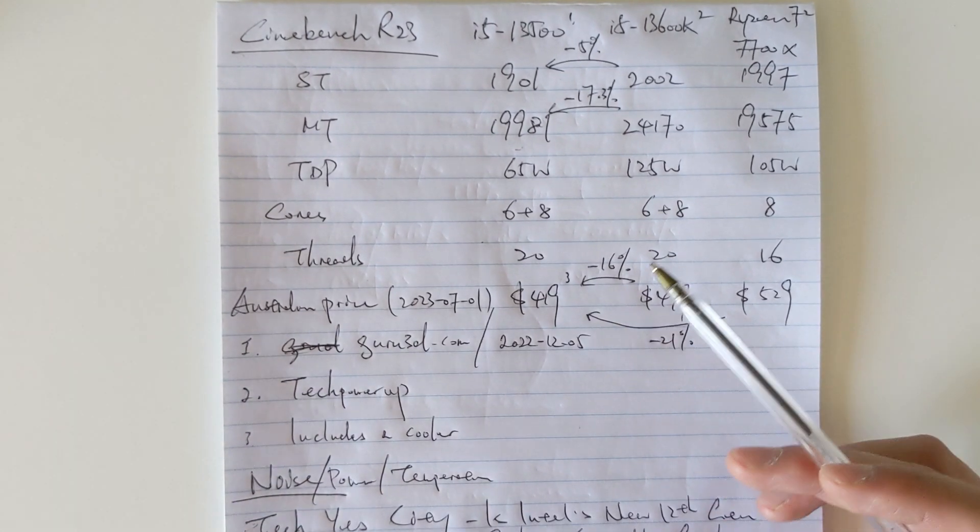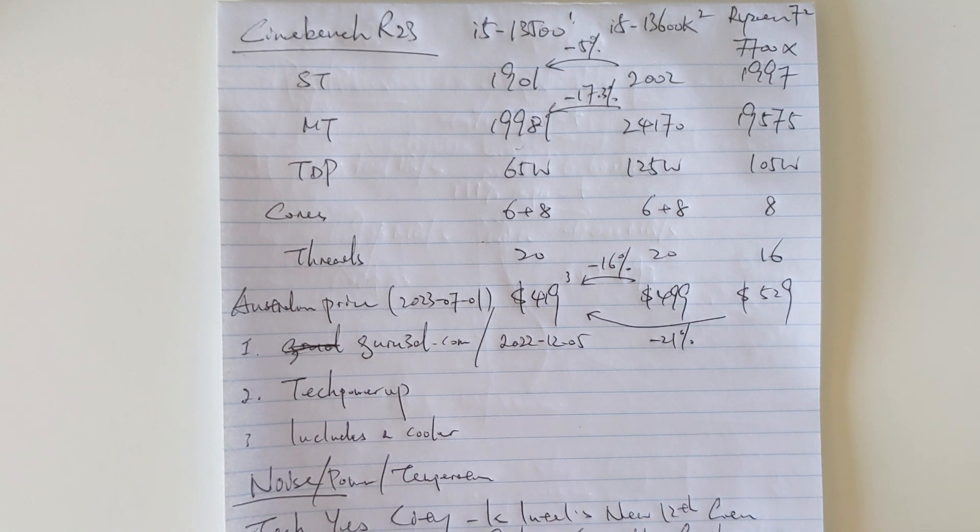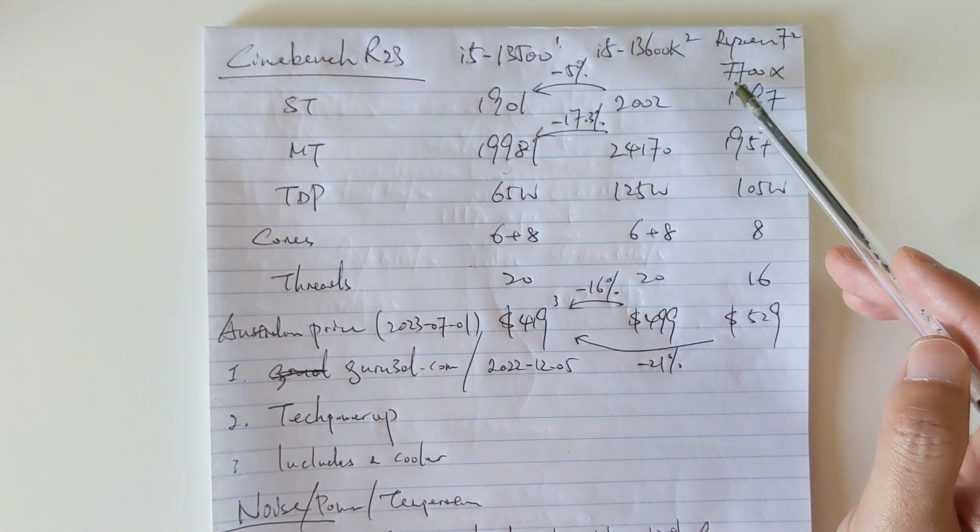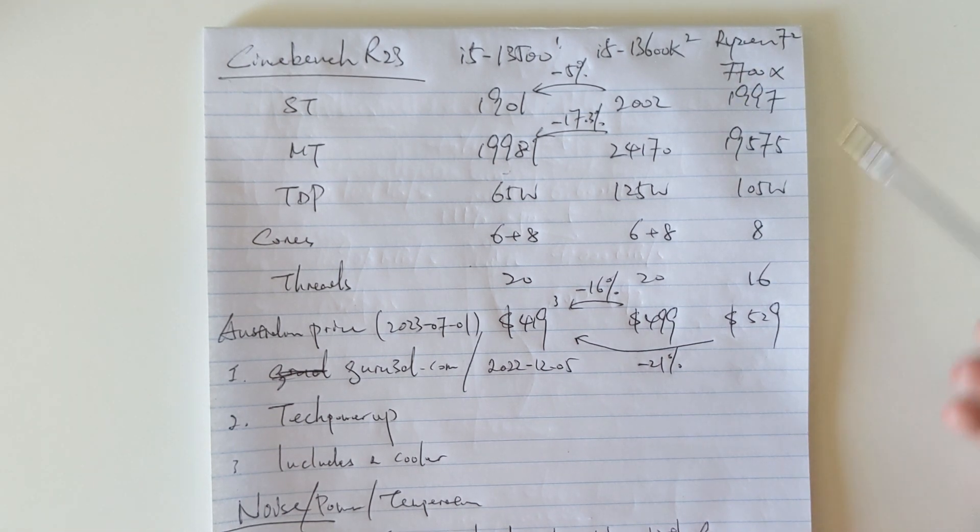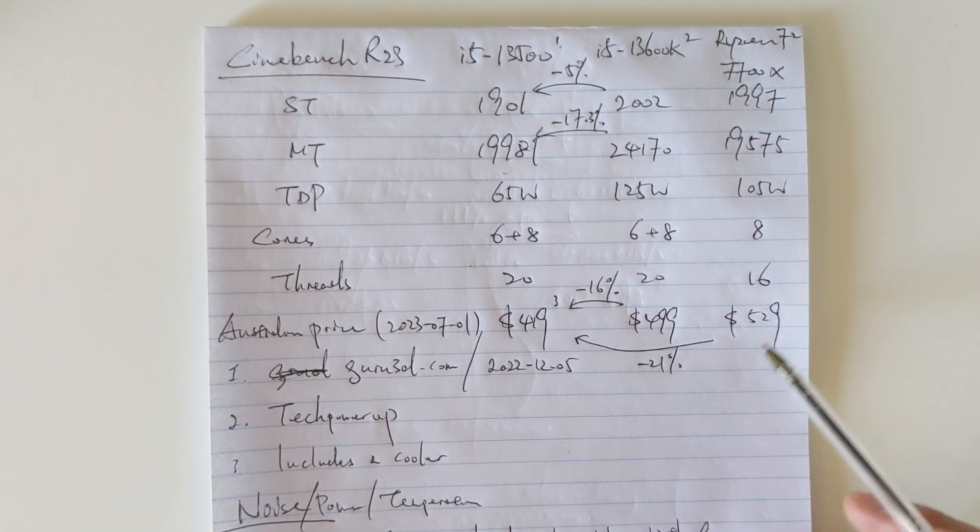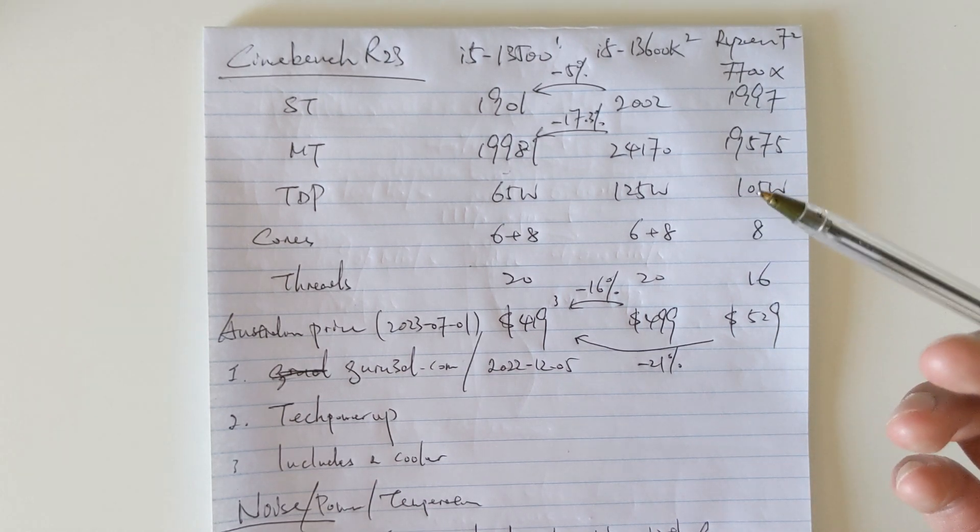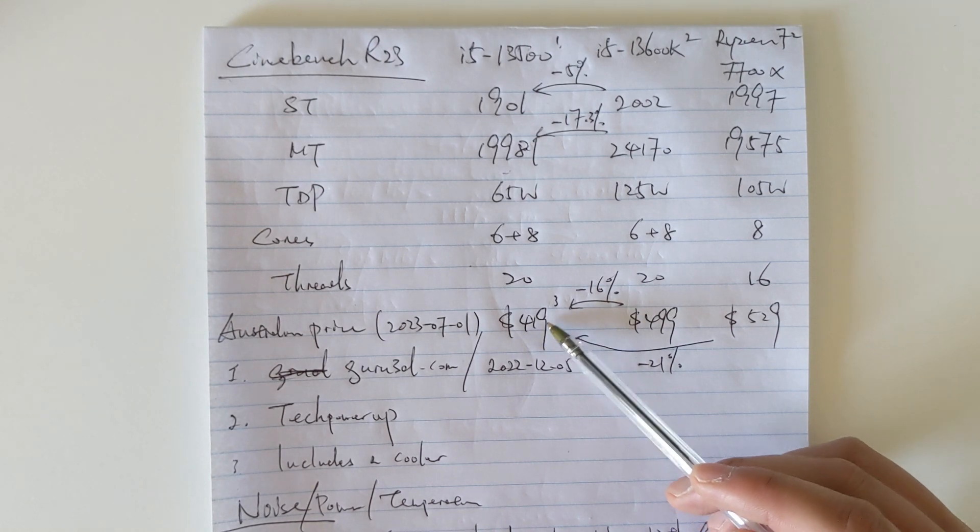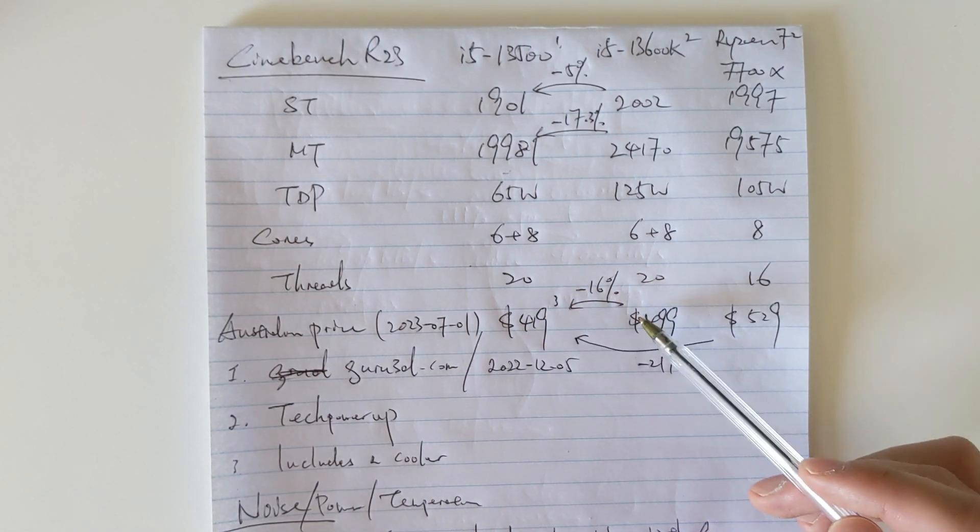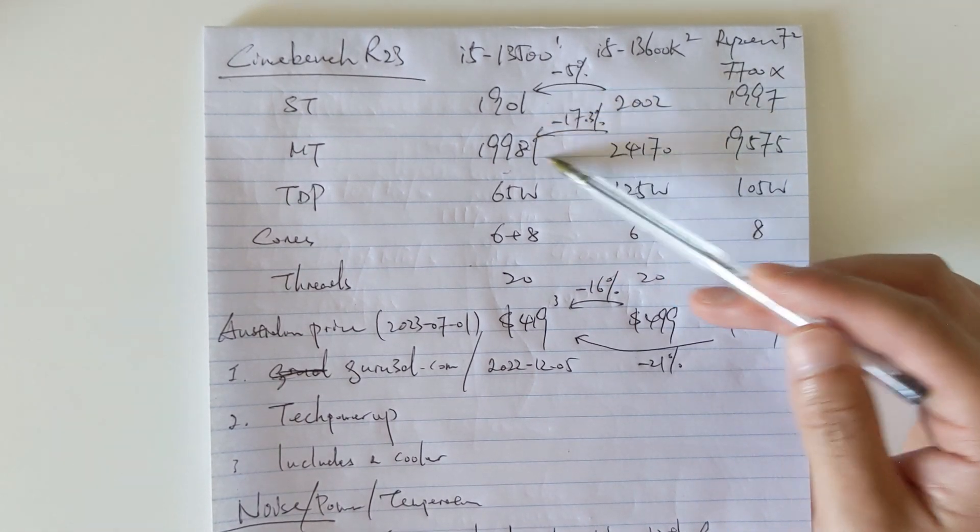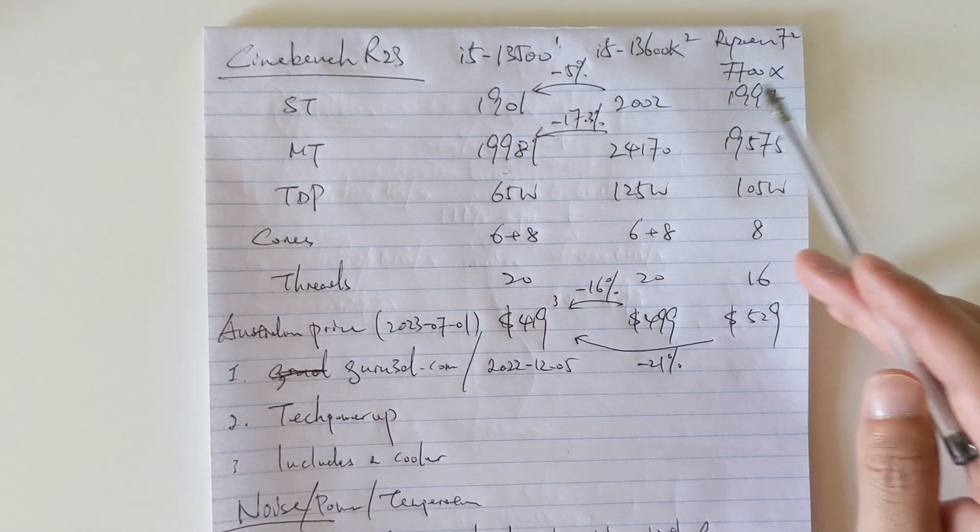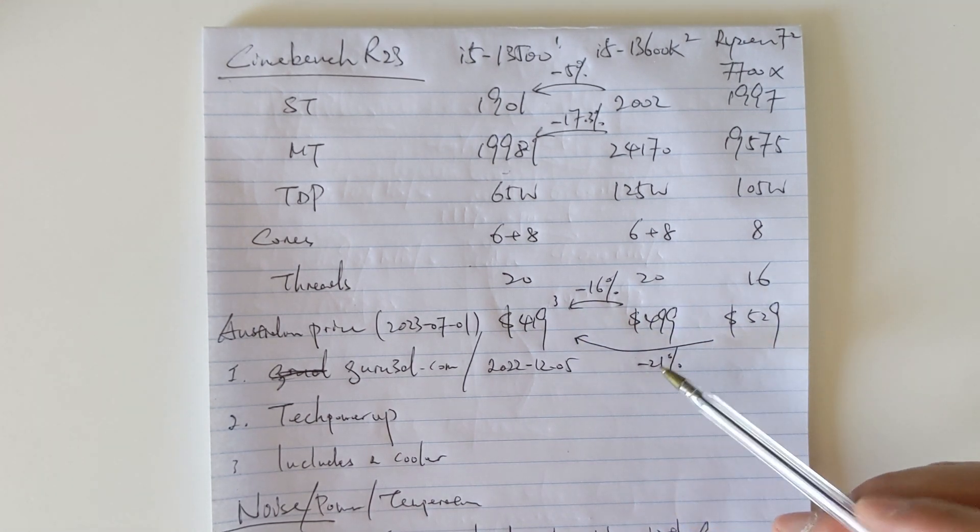Regarding the price, those values are the prices that I can find today in Australia. With these two models, the 13600K and Ryzen 7700X, they already reduced the prices quite a lot, especially for Ryzen. In any case, if you compare the launch price of 13500 versus the other two, this one is roughly 16 percent lower than the 13600K, so this number matches the multi-threaded performance. If you compare this one with the Ryzen, that's 21 percent lower.